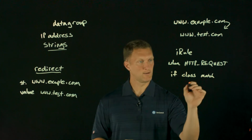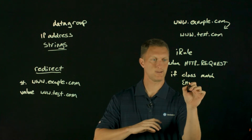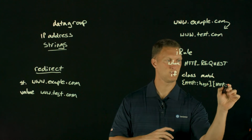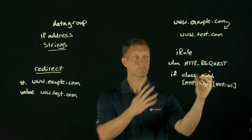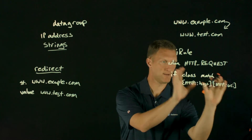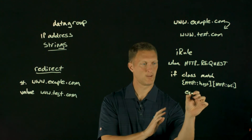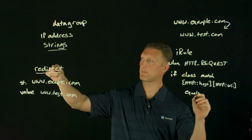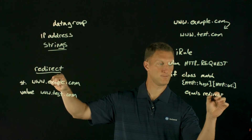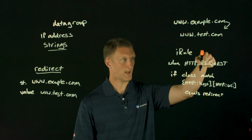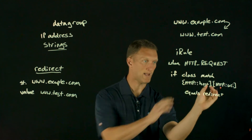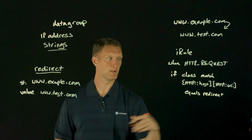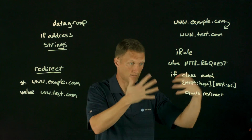So 'class match' — we're going to look at the HTTP host and also the HTTP URI. If those match, the question is: what do we want them to match against? The answer is, we're going to say 'equals' — you could use equals, starts with, begins with, contains, any kind of command you find appropriate — and then put 'redirect' right here because that is the name of the data group. So when an HTTP request happens on the virtual server with this iRule attached, if class match finds the host and URI equal to something listed in the redirect data group, this is going to fire and return true.